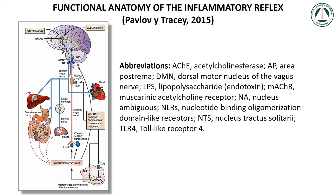Functional anatomy of the inflammatory reflex according to Pavlov and Tracy. The vagus nerve is the longest nerve of the organism, and a major component of the parasympathetic nervous system, which constitutes the autonomic nervous system, with the sympathetic nervous system. There is classically an equilibrium between the sympathetic and parasympathetic nervous systems, which is responsible for the maintenance of homeostasis.